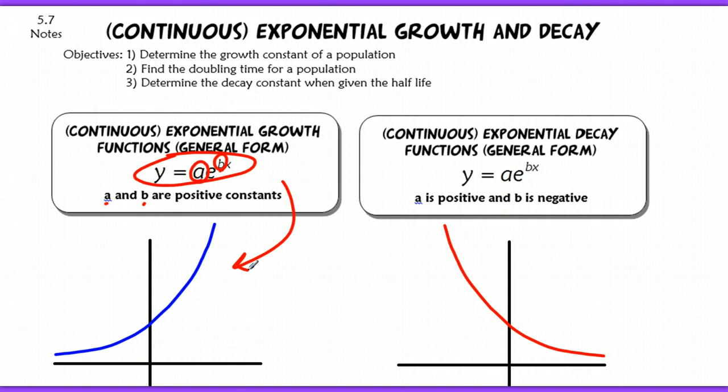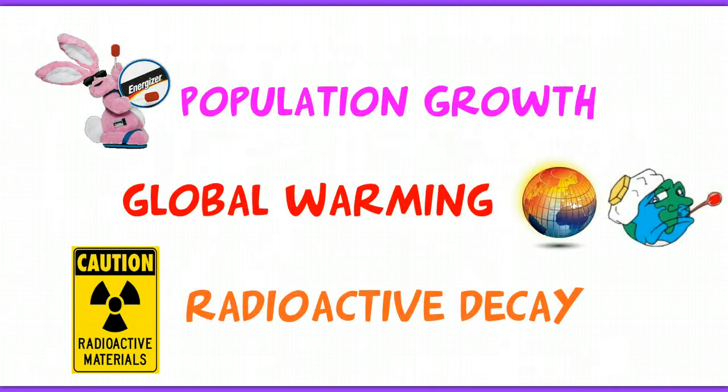With exponential decay, A is positive but B is going to be negative, resulting in a reflection across the y-axis, so that now you have a graph that looks like this. In this section, we're going to be looking at population growths, global warming, radioactive decay, all assuming that we have continuous growth or decay.